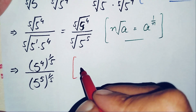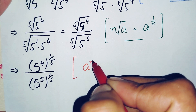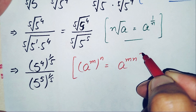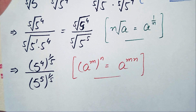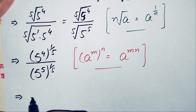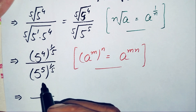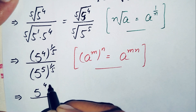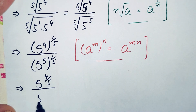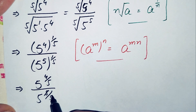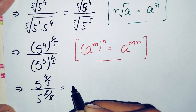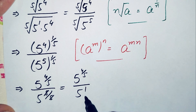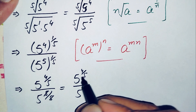In the numerator and denominator we apply the exponential property that a raised to power m, whole raised to power n, equals a raised to power m times n. Multiplying the powers in the numerator gives 4 times 1 over 5, which is 4 over 5. In the denominator it gives 5 times 1 over 5, which equals 1, leaving 5 raised to power 1, which is simply 5.